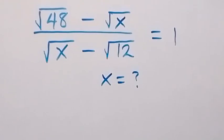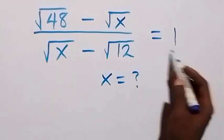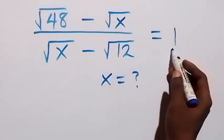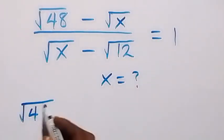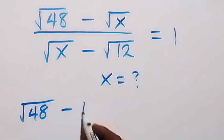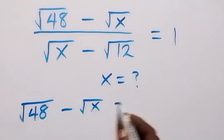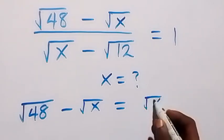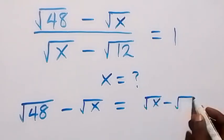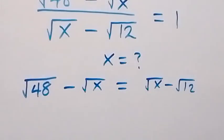Hello, you are welcome. How to solve for x in this nice problem involving roots. From here, let's cross multiply. When we cross multiply, this gives us root 48 minus root x equals 1 times root x minus root 12.